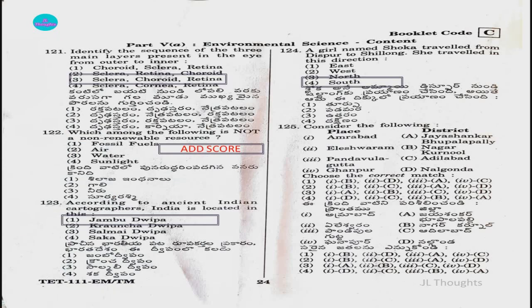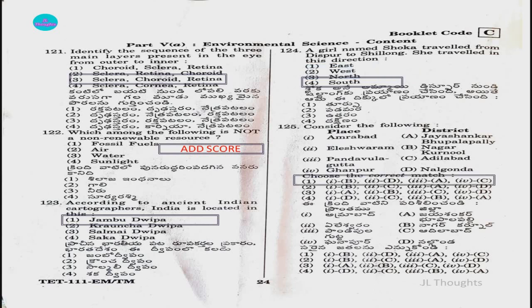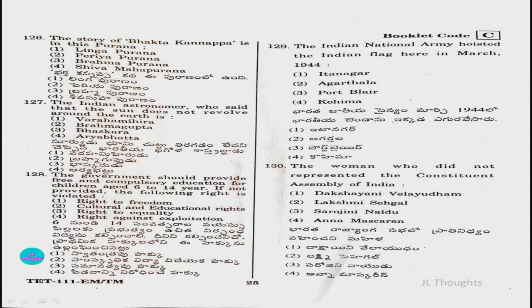Question number 125: Consider the following place-district matching. Places: 1. Amrabad, 2. Elishwaram, 3. Pandavala Guttha, 4. Ganpur. Districts: A. Jayashankar Bupalpali, B. Nagarkarnol, C. Adilabad, D. Nalgonda. The correct match from the Telangana state places textbook class 8 is: Amrabad–Nagarkarnol, Elishwaram–Nalgonda, Pandavala Guttha–Jayashankar Bupalpali, Ganpur–Adilabad. Answer is option one.